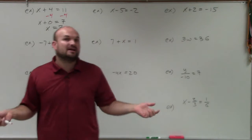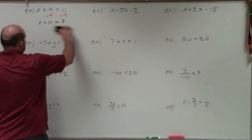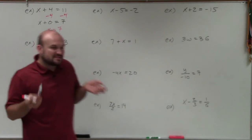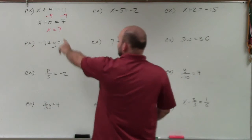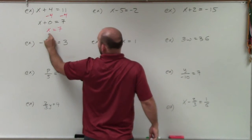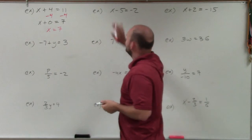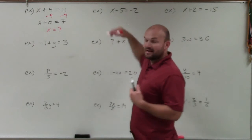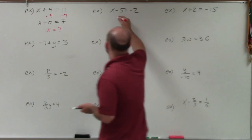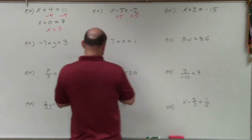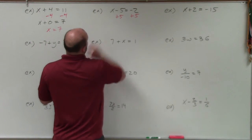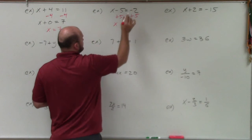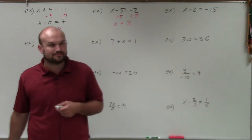By using inverse operations with adding and subtracting, what I do is obtain 0, which allows me to identify my variable x. Now let's look at the next example. My variable is x and it's being subtracted by 5. So to undo subtracting by 5, I need to add 5 to both sides. Doing that, I obtain x equals negative 2 plus 5, which is a positive 3.